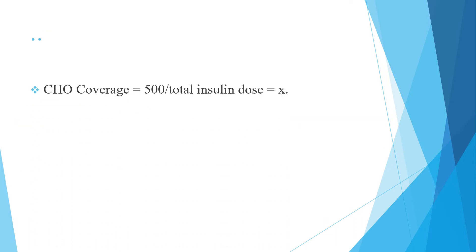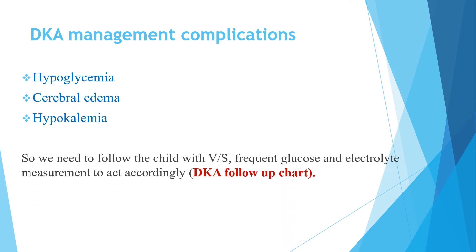For carbohydrate coverage: divide 500 by the total daily insulin dose; this result (X) means one international unit of regular insulin covers X grams of carbohydrate. The most common DKA management complications are hypoglycemia, cerebral edema, and hypokalemia. We need to follow the child with vital signs, frequent blood glucose levels, urine ketones, and electrolyte measurement. Arterial blood gas analysis is important if available, and we should follow using a DKA follow-up chart which tracks all of these parameters.